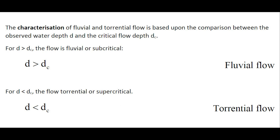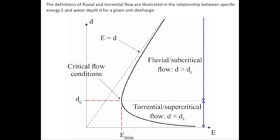The characterization of fluvial and torrential flow is based upon the comparison between the observed water depth and the critical flow depth dc. When the water depth is greater than the critical depth, the flow is fluvial. When the water depth is less than the critical depth, the flow is torrential.